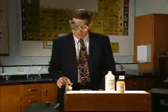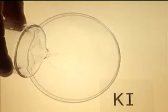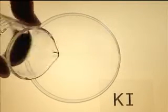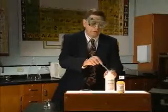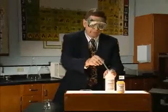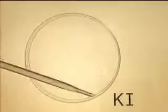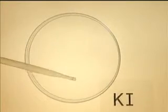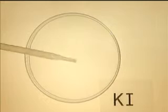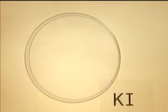To demonstrate the electrolysis of potassium iodide, we have a potassium iodide solution which we'll place in the Petri dish. We'll then add a few drops of phenolphthalein indicator to the potassium iodide solution.